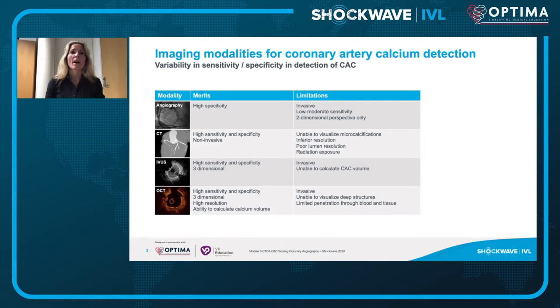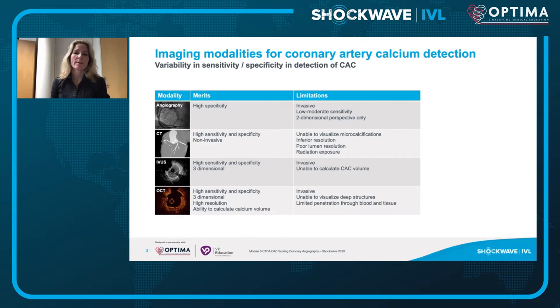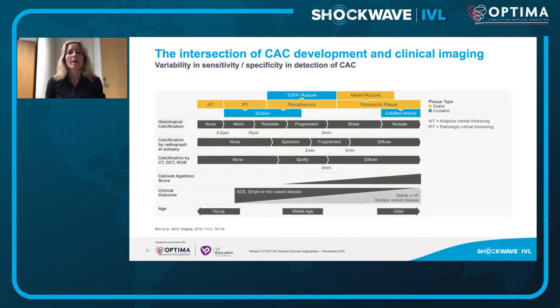Both IVUS and OCT are highly sensitive and specific in detecting coronary artery calcium. IVUS is less effective in evaluating volume, and OCT has the drawback of limited penetration through blood, requiring additional contrast. These further limitations and advantages will be discussed later today.